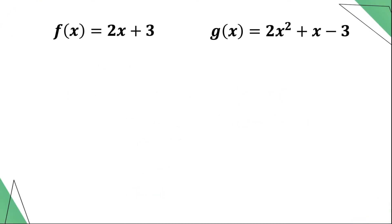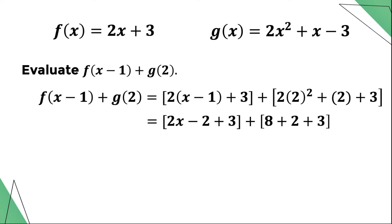For example 4, let us compute for f(x - 1) plus g(2). Replacing x in function f with x minus 1 and positive 2 for function g and performing the indicated operations, the value is 2x plus 14.